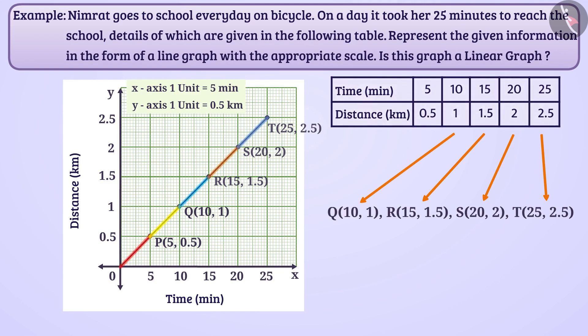All the line segments of the constructed graph are part of the same line. So, we can say that the obtained graph is a linear graph.